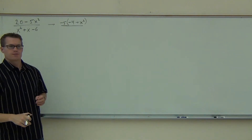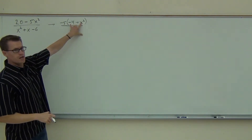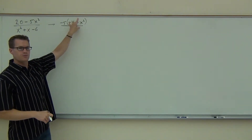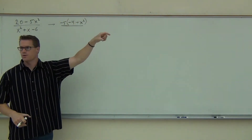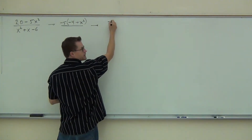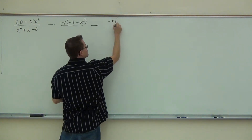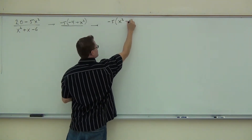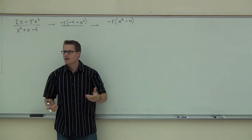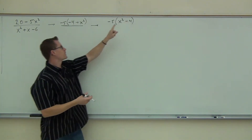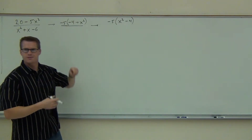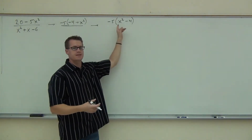Now, the last question I have for you about this: is it okay if I include the signs but flip these things around? So instead of negative 4 plus x squared, can I have x squared minus 4? Yes. So negative 5 stays there, and we have x squared minus 4. This thing is a whole lot easier to work with than what I had before.